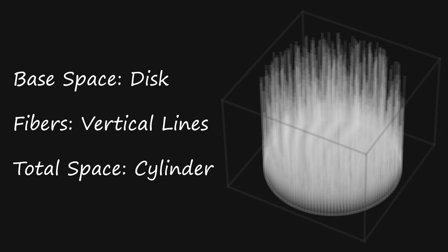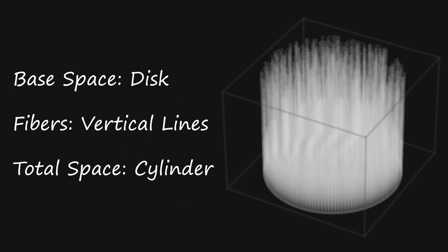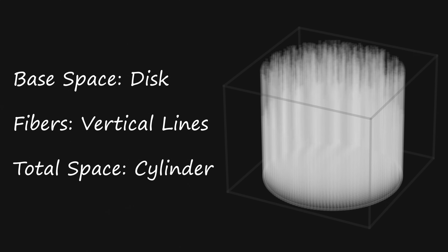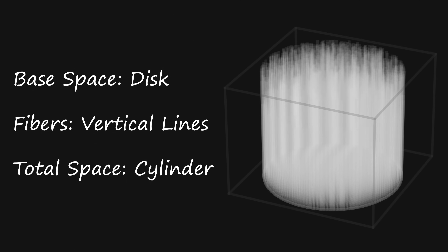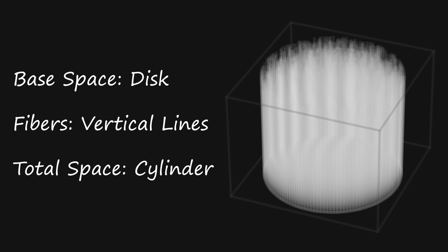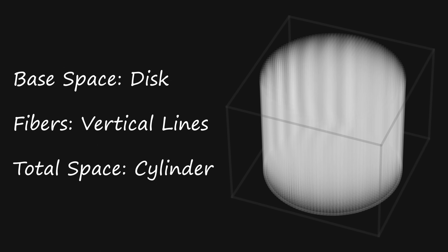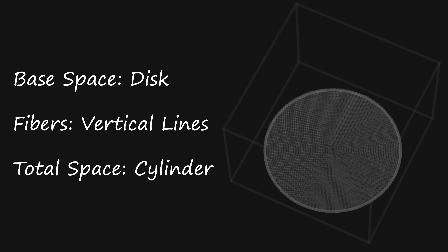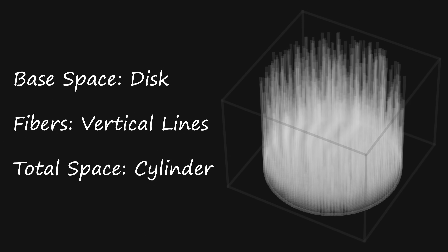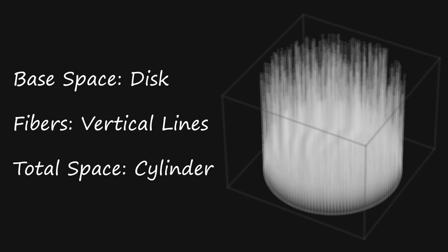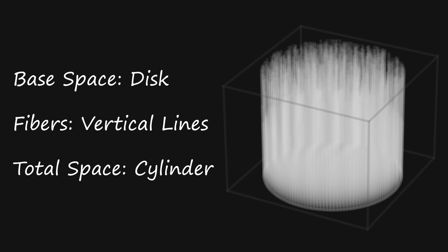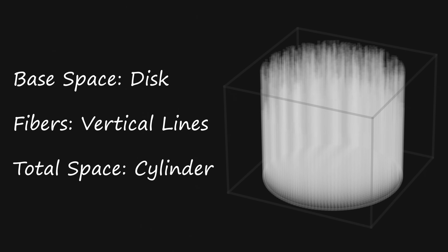Technically I misspoke — the base space is actually a disk, not a circle. In math, a disk is the whole area of the circle, and a circle is just the edge. Also, I'm showing the fibers here as if they're growing, but in an actual fiber bundle the fibers aren't actually growing — they're full grown already. They exist; they live on the base space and they fill the total space. I'm just animating them as growing to make it easier to see the individual fibers.